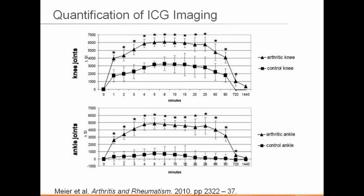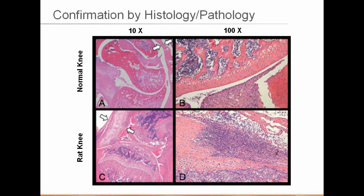They then confirmed by histology that in a normal knee you don't see a lot of immune cell infiltration, but in their models you see massive swelling and infiltration of immune cells.